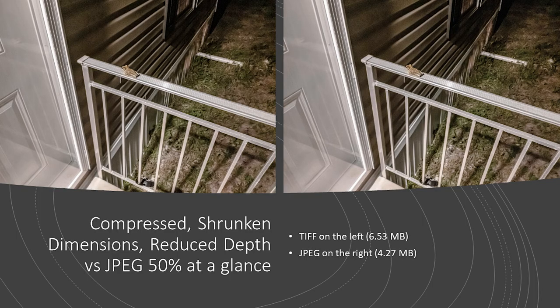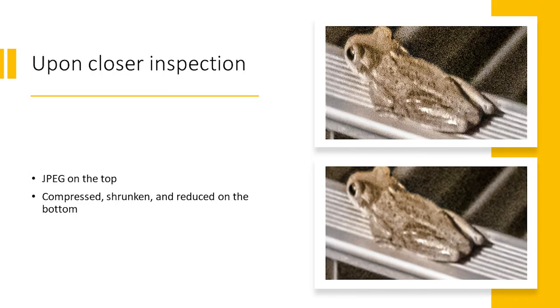For our last example, let's compare a compressed TIFF with halved dimensions and half bit depth to a JPEG saved at 50% quality. Again, an initial look doesn't offer explicit differences. Zoomed in, the smaller file size JPEG presents sharper details on the frog than the TIFF. Therefore, if file size is of the most concern, it's more sensible to use the 50% quality JPEG here than a heavily reduced TIFF.